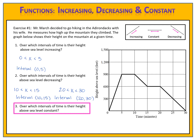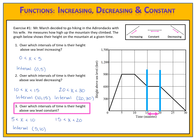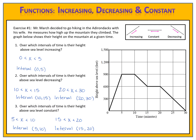Question three asks over which interval of time is the height above sea level constant? There are two constant sections. The first is from 5 to 10 minutes, written as a compound inequality or interval notation. The second is from 15 to 20, again written either way. I've now used the graph to identify where the function is increasing, decreasing, or constant. It doesn't matter which type of notation you use — use whatever is most comfortable for you.